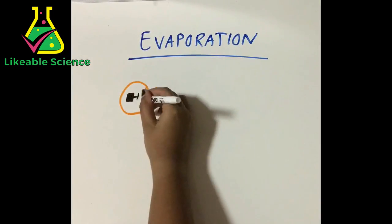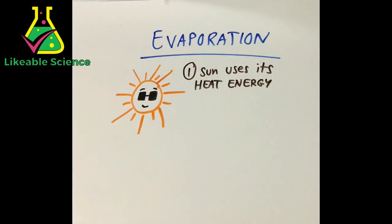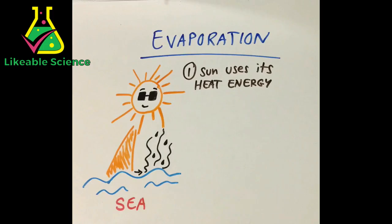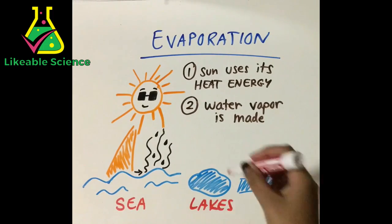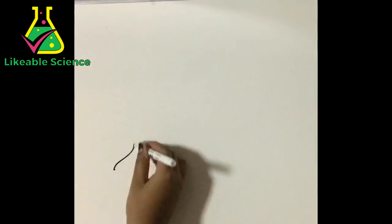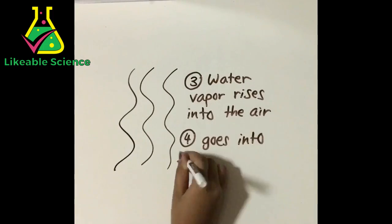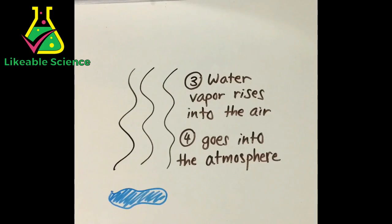First up is evaporation. Let's see where the sun uses its heat energy to make water vapor from the water in the sea and even puddles and lakes and other water bodies. Then the water vapor rises into the air, goes high into the atmosphere without a care.